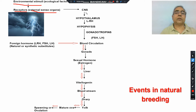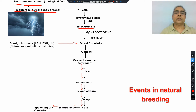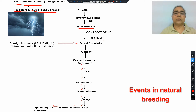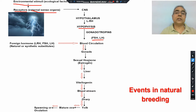The receptors of these external sense organs receive environmental stimuli and send messages to the central nervous system. The central nervous system, by sensing the favorable environment, induces the hypothalamus to release LRH. This LRH induces the pituitary gland of the fishes to release gonadotropins — meaning FSH-LH hormones. These hormones are responsible for the sexual maturity and development of the sex organs. FSH-LH hormones, through blood circulation, reach the gonads, where they help in attaining maturity of the sex cells.